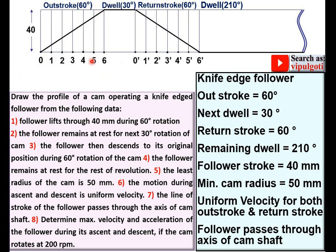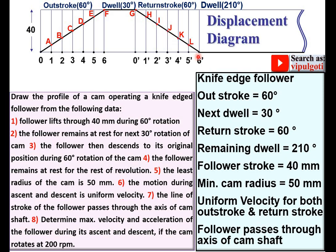For the uniform velocity motion, remember it is a straight inclined line. In the out stroke, the follower rises — so the line goes upward. For the return stroke, the follower falls — the line goes downward. Label the intersection points on the out stroke as A, B, C, D, E, F, and for the return stroke as G, H, I, J, K, L. This completes your displacement diagram.